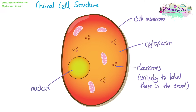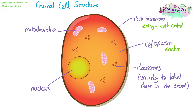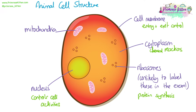Then we have the nucleus, which is the biggest circle-shaped structure inside the cell, and then we have the mitochondria — normally little oval shapes with wiggly lines inside. The cell membrane's function is to control the entry and exit of substances into the cell. The cytoplasm is where chemical reactions happen. Ribosomes do protein synthesis — making proteins. The nucleus controls cell activities. Mitochondria is where aerobic respiration happens and provides energy for the cell.